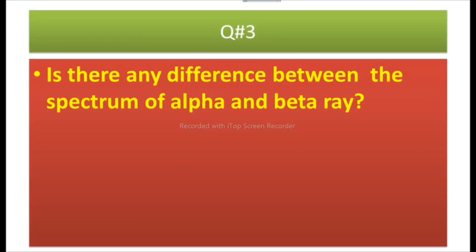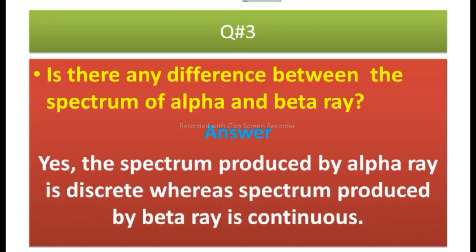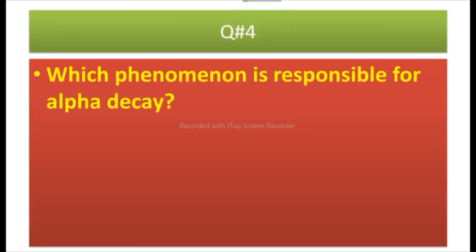Question number three: Is there any difference between the spectrum of alpha rays and beta rays? Answer: Yes. The spectrum produced by alpha rays is discrete, whereas the spectrum produced by beta rays is continuous.